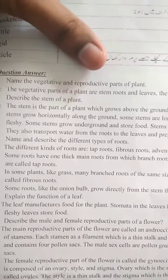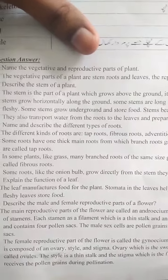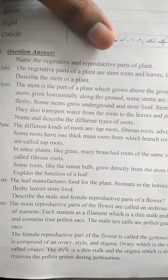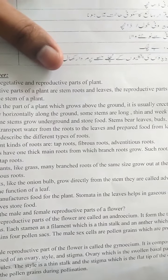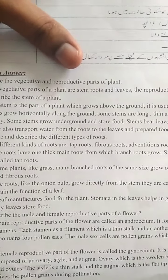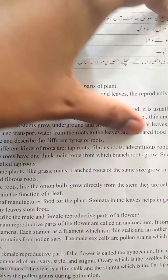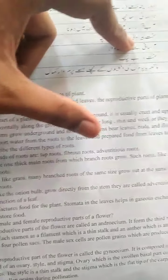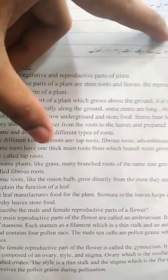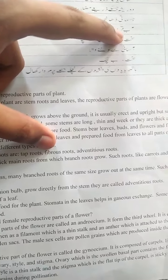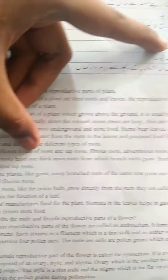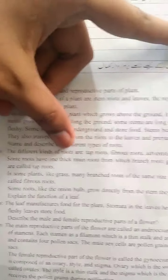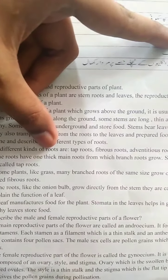Question number 3: Name and describe the different types of roots. The different kinds of roots are tap roots, fibrous roots, and adventitious roots — so roots have three types. Some roots have one thick main root from which branch roots grow; examples like carrot and radish are called tap roots. In some plants like grass, many branch roots of the same size grow out at the same time — such roots are called fibrous roots.